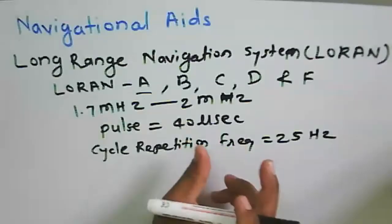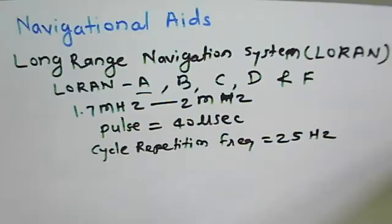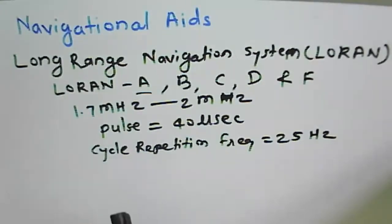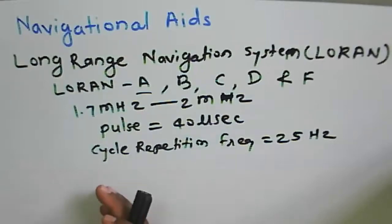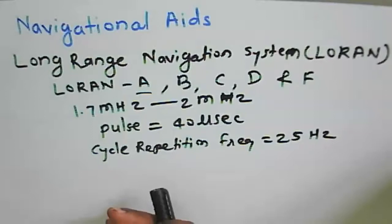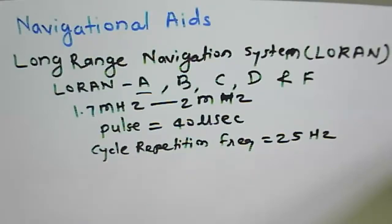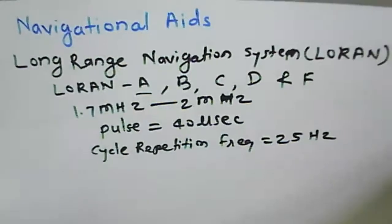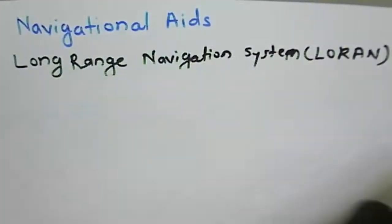Comparing LORAN A and LORAN B: they differ in phase variation during signal transmission. The master transmits the signal and the secondary station receives it. Based on the variation in phase, a line of position is found and the location is determined. LORAN C is used in applications and is the most accurate version.